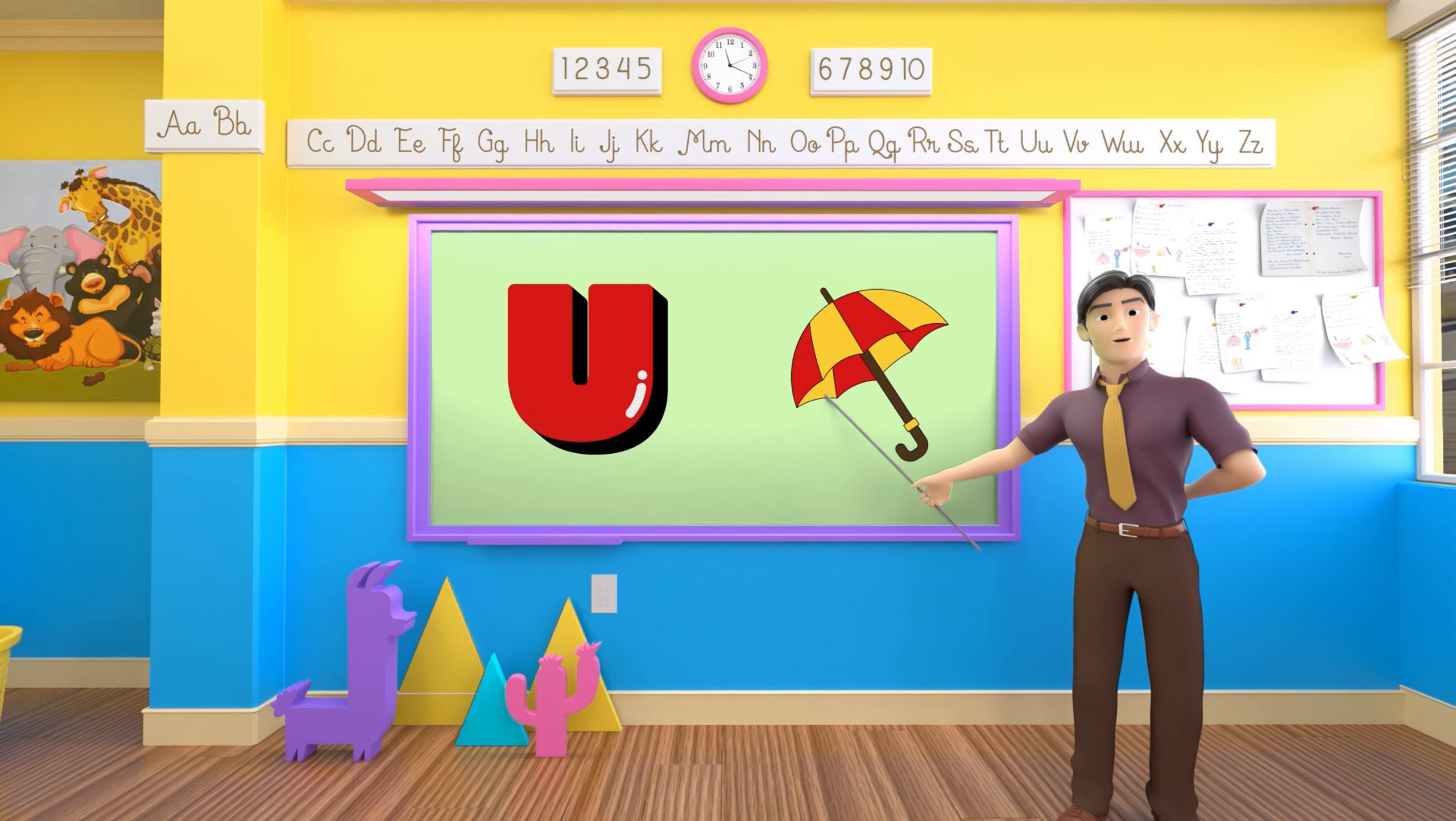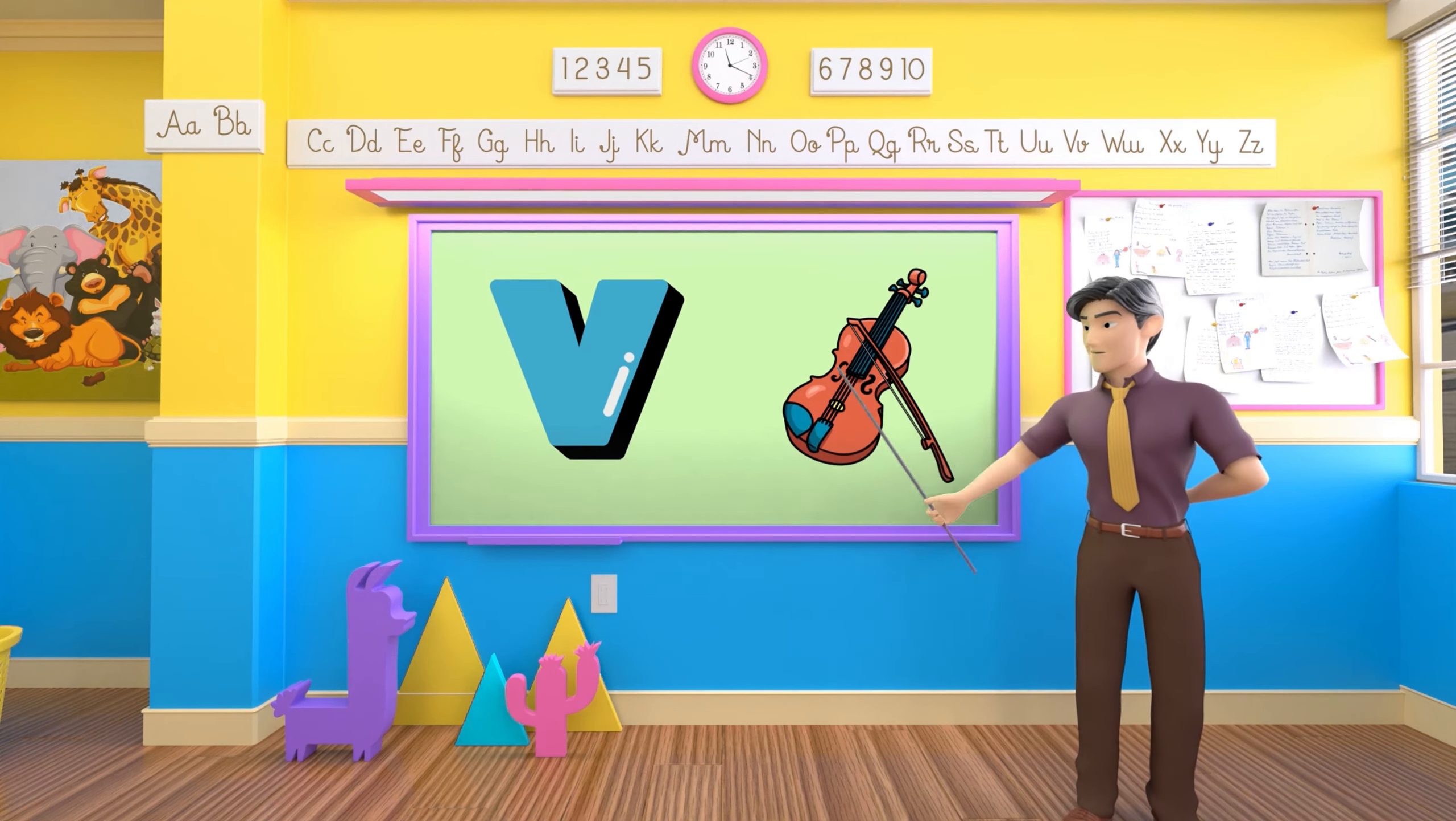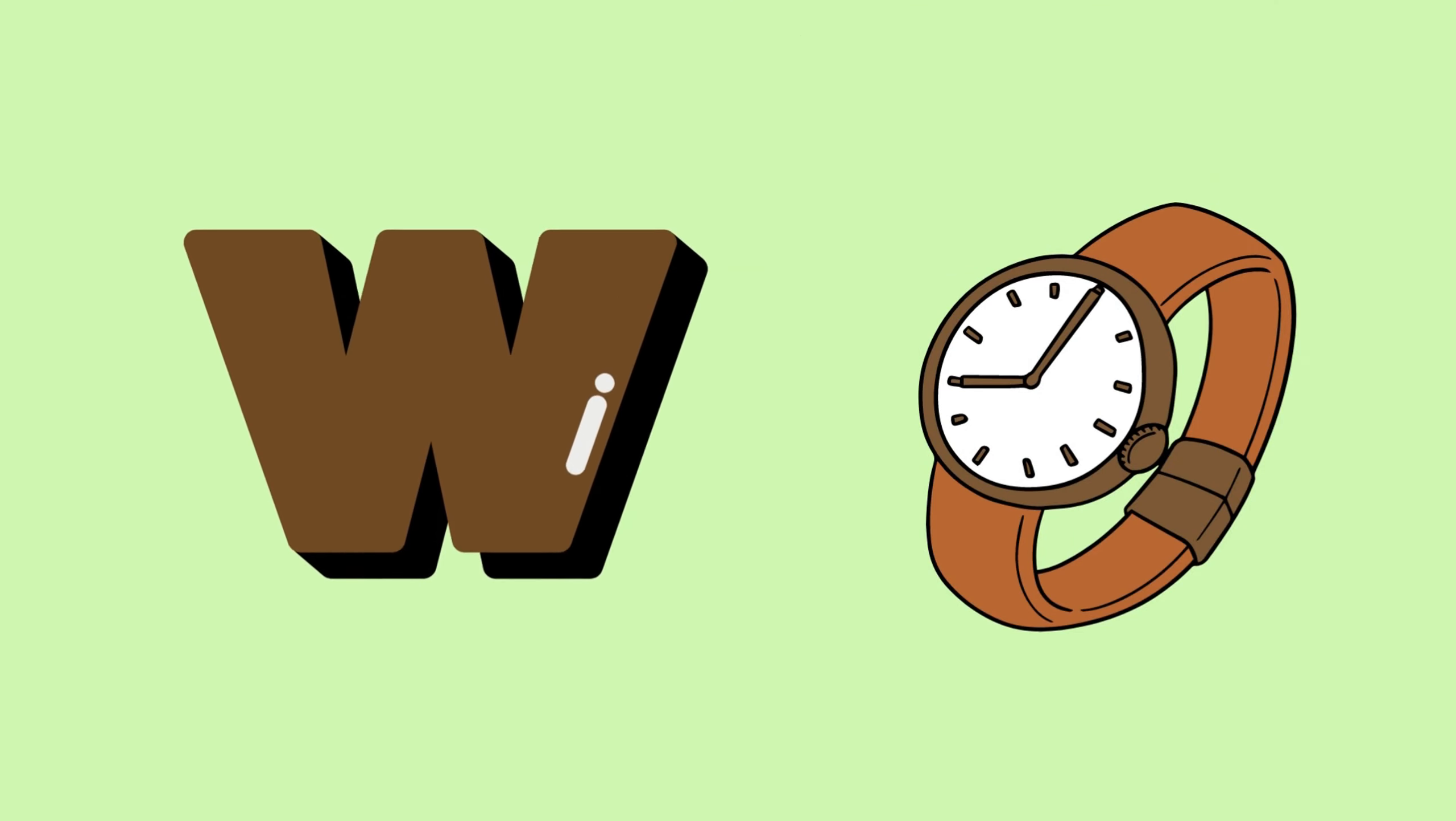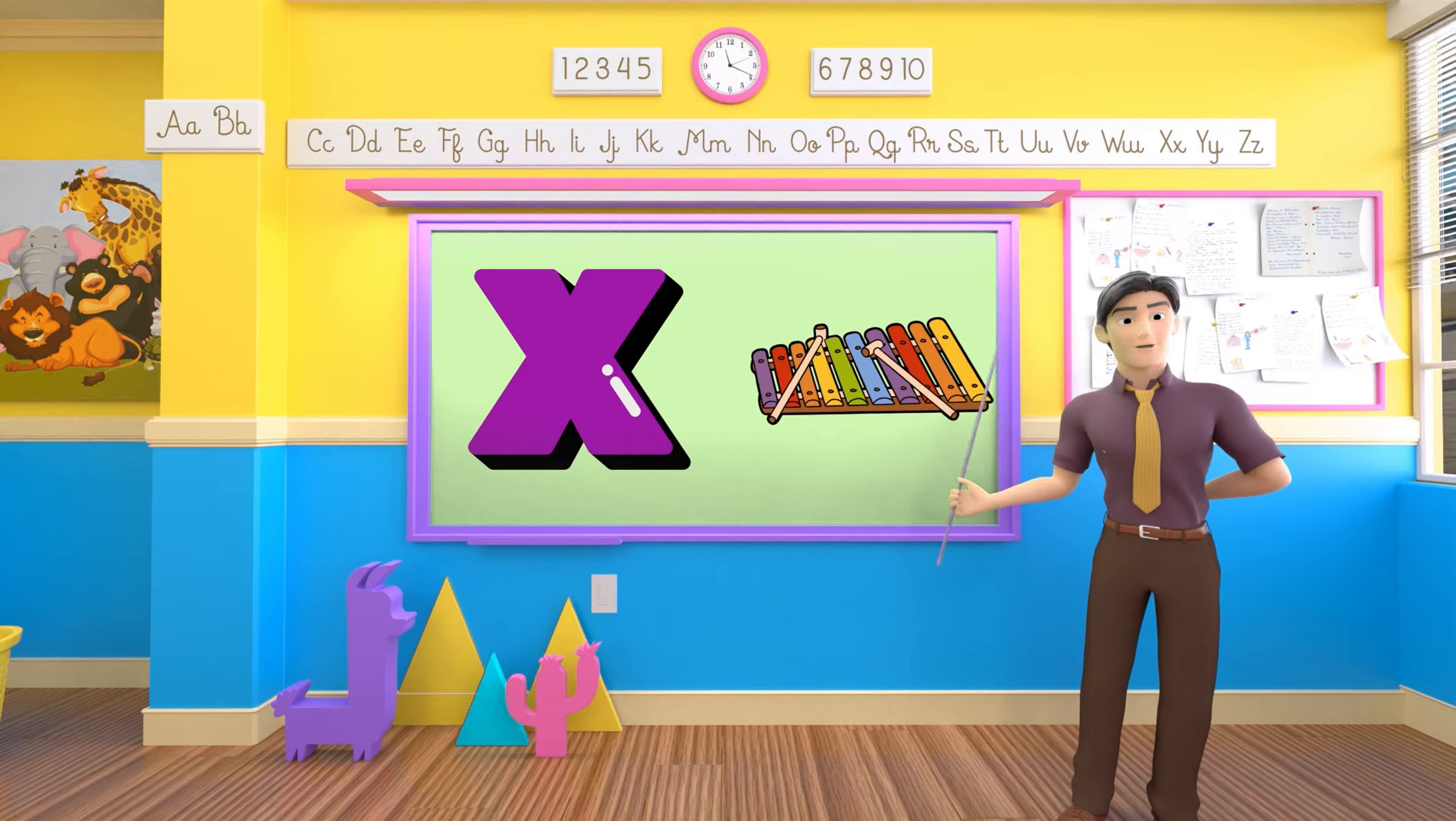U is for umbrella, u-u-umbrella. V is for violin, v-v-violin. W is for watch, w-w-watch. X is for xylophone, x-x-xylophone.